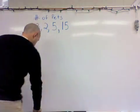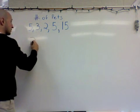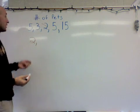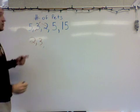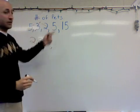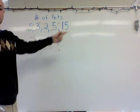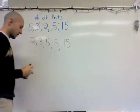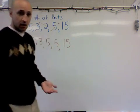Let's find which number is smallest in our set — that's two, so it'll be our first number. Then three is next. Now the next smallest number is five, and we have another five. That leaves us with the largest number in the set: 15. Now that all our data is in order from least to greatest, we can find the mean, median, and mode.